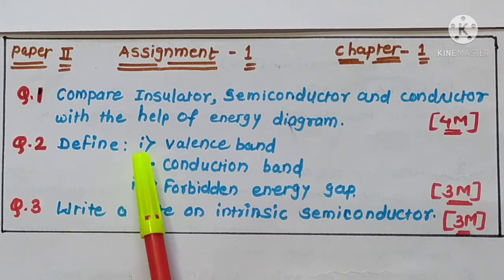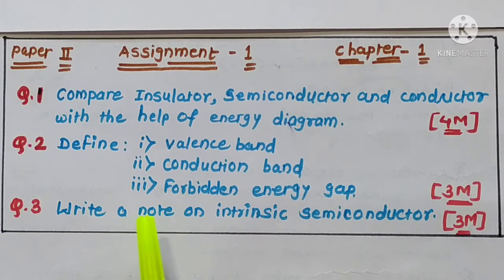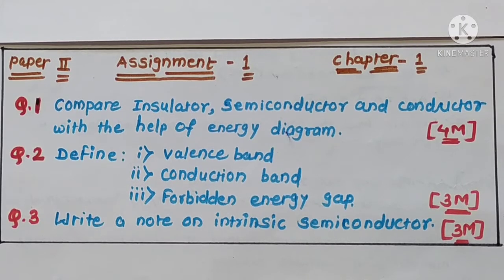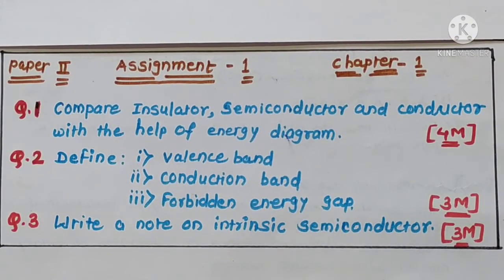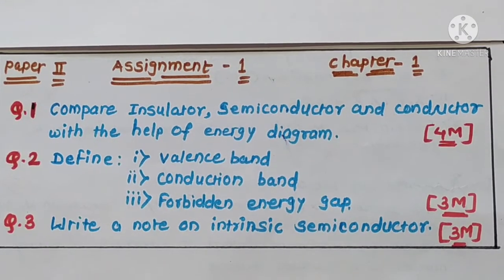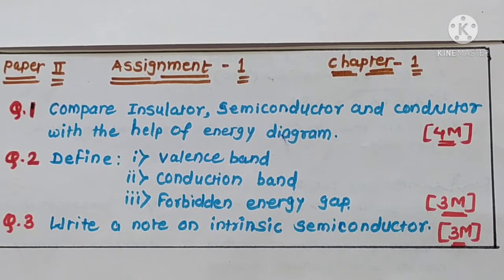Question 2: Define valence band, conduction band, and forbidden energy gap. This question carries 3 marks. Question 3: Write a note on intrinsic semiconductor. This carries 3 marks. You have to complete this assignment in a separate notebook. All assignments are compulsory for internal assessment. Today we finished intrinsic semiconductor, extrinsic semiconductor, and comparison of P-type and N-type semiconductors.